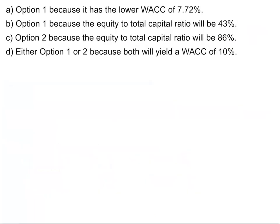Now let's look at the answer choices. Choice A says option one because it has the lower weighted average cost of capital — maybe the WACC is 7.72%, but that doesn't automatically make it correct. Choice D says either option one or two because both yield a WACC of 10%. We know the WACC will not be 10% — it'll actually be less than 10% because the after-tax cost of debt is less than 10% and there is some debt in the capital structure. So choice D is wrong.